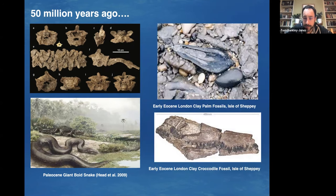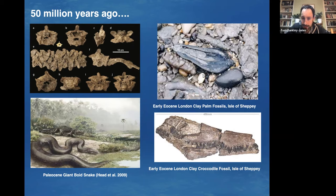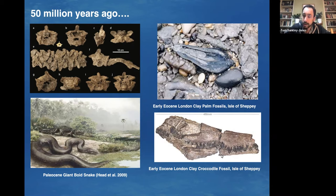Closer to home — I was out on the Isle of Sheppey a couple of weeks ago in half term. This is a palm fruit from the Isle of Sheppey in the London Clay — early Eocene, 50-million-year-old deposits weathering out on the beach. A palm tree is not going to grow on Sheppey unless it's well protected or in a greenhouse. We've also got crocodiles, turtles, and a diverse community of vertebrate organisms living on Sheppey that are typically found in tropical or subtropical environments today. Clearly the climate has changed significantly between the Eocene and modern.